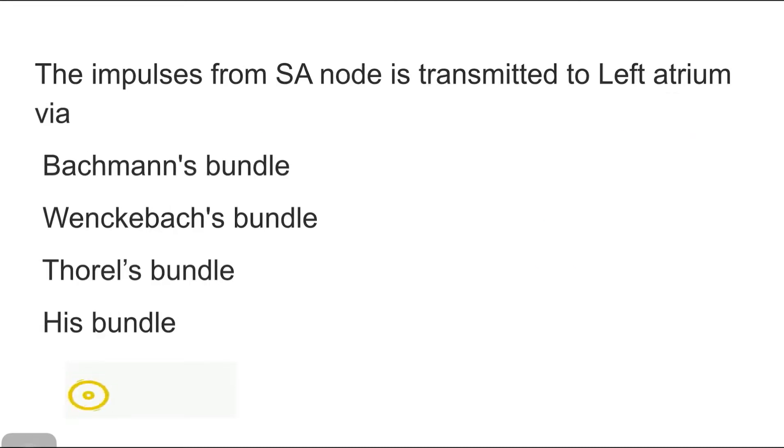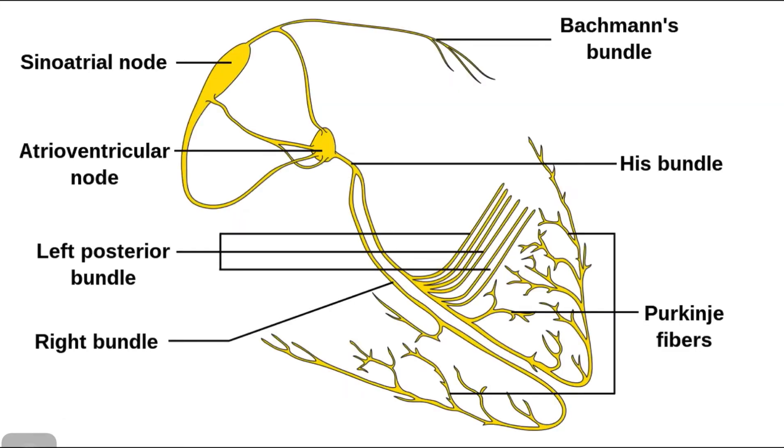Next, the impulses from SA nodal cell is transmitted to the left atrium via Bachmann or Wenckebach or Thorel bundle or His bundle. So let's brush up the anatomy. If you look closely in the image, the SA node which is situated in the right atrium transmits impulses to the AV node through three internodal pathways. What are those pathways?